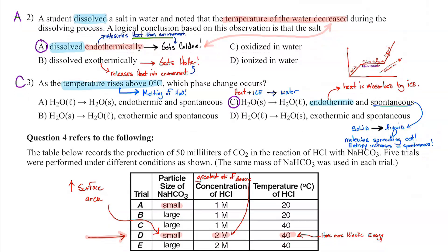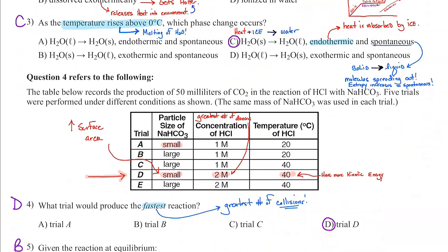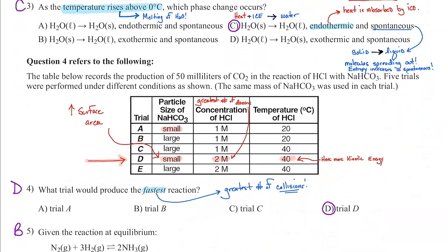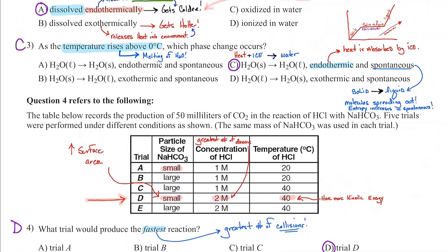Number three: the temperature rises above zero — which phase change occurs? It's melting. They have water here, and we should know that the melting point of water is approximately zero degrees Celsius. So when we're above that, we start to melt. Remember our phase diagram? We have the solid phase and the liquid phase, and this phase change is at equilibrium.